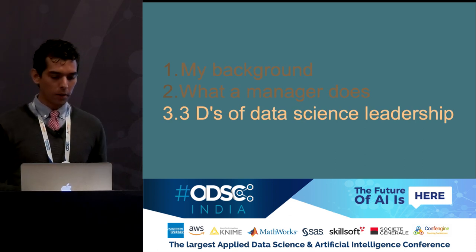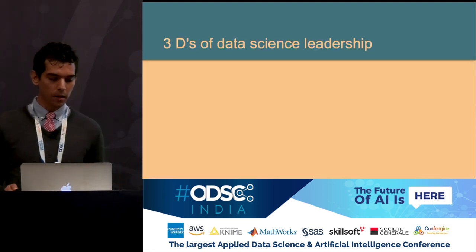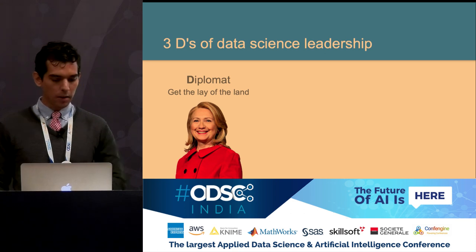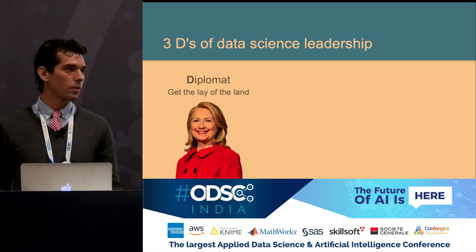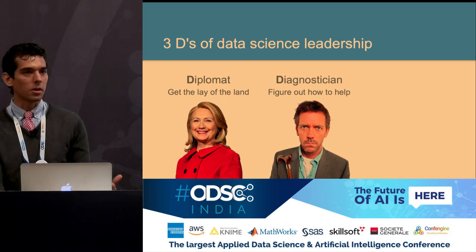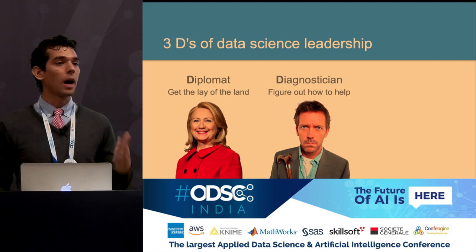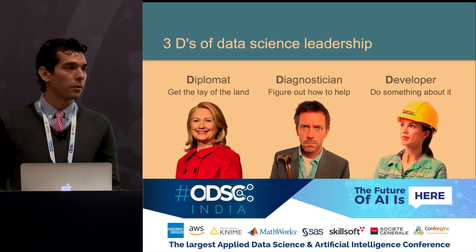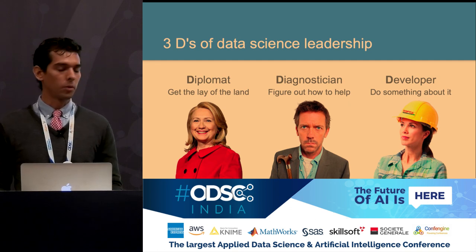With this definition of management as a framework, this is my best working hypothesis of what it takes to be a successful data science leader — what I call the three D's of data science leadership. A data science leader wears three hats. First, they wear the hat of a diplomat: getting the lay of the land and figuring out what's happening in the organization and what their team can do in that space. Second, they act as a diagnostician: figuring out how the team can deliver value to the organization. And finally, a leader has to be a developer: figuring out, given what they've learned and the problems they've identified, what they can actually deliver for both the team and the organization.